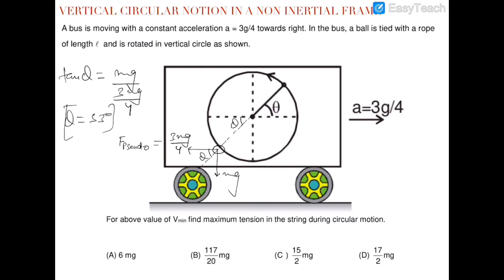We have to find the maximum tension when the ball is already projected. Don't confuse this with the tension calculated in the earlier video, which was the tension when the ball was in equilibrium. Here we find the maximum tension when the ball has already been projected.